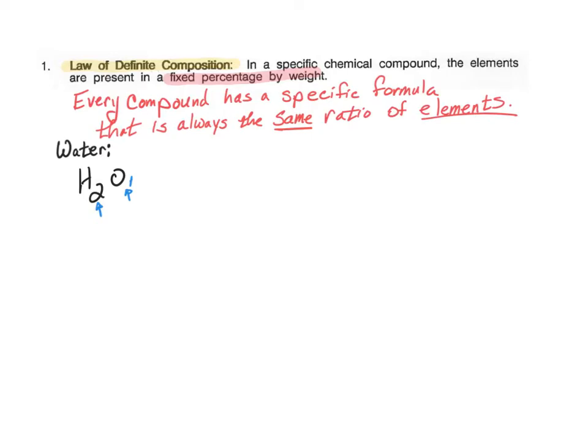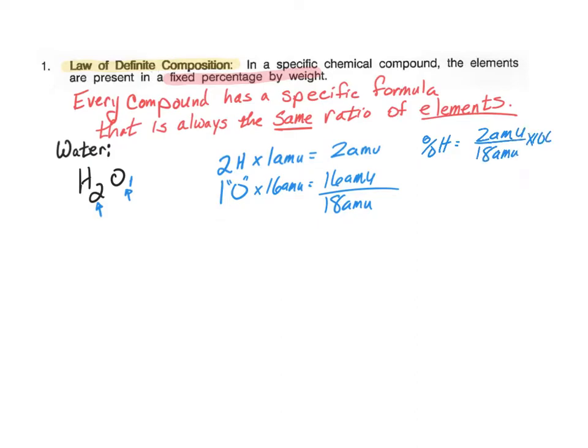The reason that the law states that it has to have a fixed percentage by weight is because we can calculate what the weight would be of the hydrogen and the oxygen. Because again, we know that there are two hydrogens and one oxygen, and we know the atomic masses of hydrogen and oxygen. So I'm going to show you mathematically what I mean. You do not have to do this math. We know that there are two hydrogens, and that each hydrogen atom weighs one amu, for a total of two amu. There's one oxygen atom, and it weighs 16 amu, so that our total is 18 amu. To find the percentage of hydrogen, we'll take the 2 amu for hydrogen, divide that by 18 amu total, multiply by 100% to make it a percent, and we'll find that it is 11.11% hydrogen.